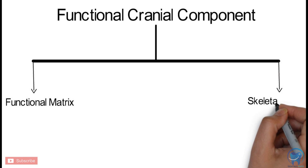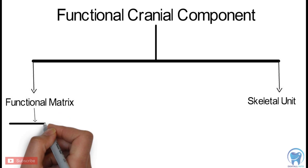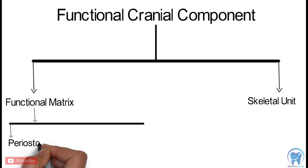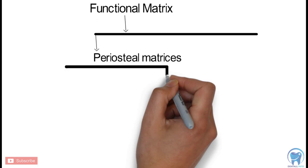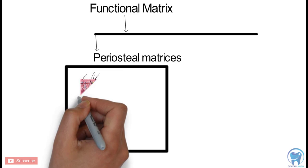The Functional Matrix is divided into two. First is the Periosteal Matrix. The Periosteal Matrix includes the various muscles, blood vessels, nerves, glands, etc.